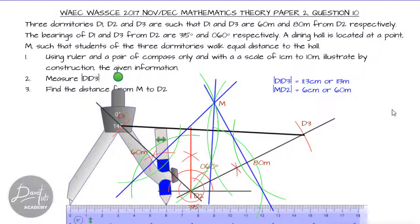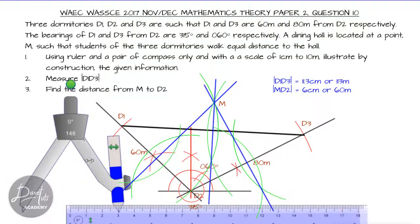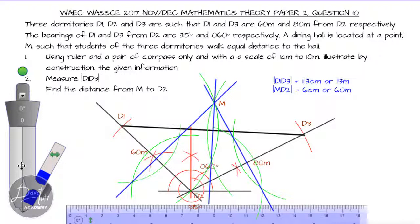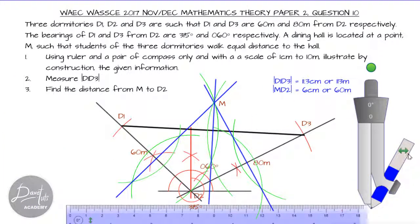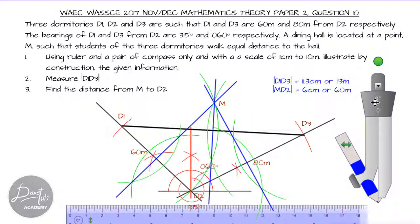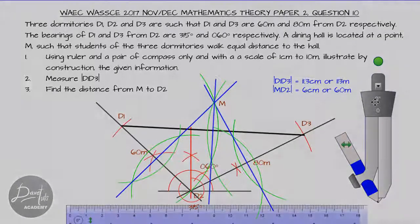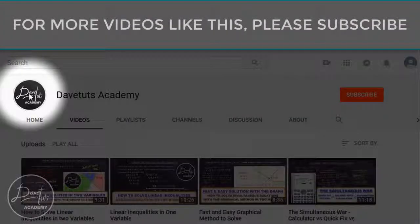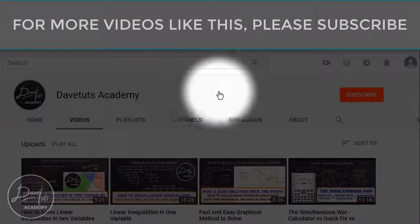In this video we have been able to construct the circumcenter of a triangle, interpret questions on bearing and distance, draw angle 315 degrees, draw angle 60 degrees, and bisect an angle. We hope this will help you in preparing for your exams. That's all for today at DevTut Academy.